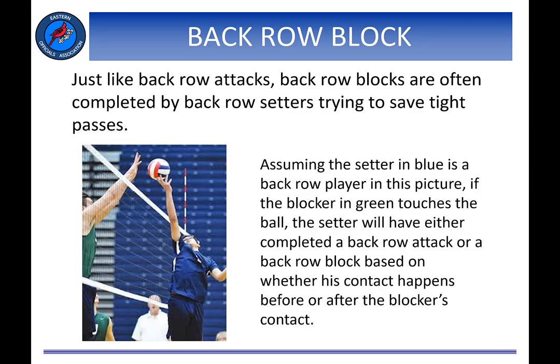Since the setter is frequently at the net making the second team contact and sometimes must reach higher than the top of the net to make that contact, the setter can easily turn into a blocker under the right circumstances. A tight pass or an overpass that a back row setter tries to save can become a blocked ball if the setter is reaching above the height of the net and a player from the other side attacks or blocks it back into him. This is the most common instance of a back row block. As an aside, if the setter contacted the ball first and then the ball touched the blocker in green, the setter would then have completed an illegal back row attack.